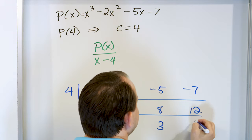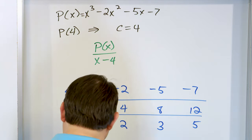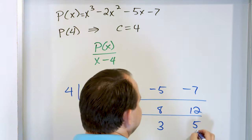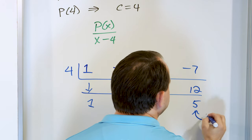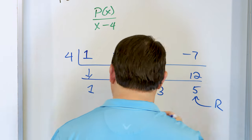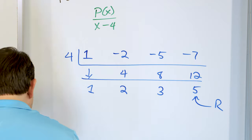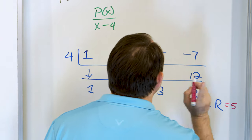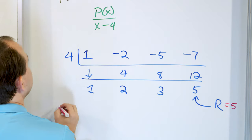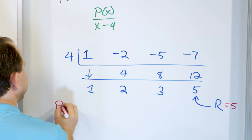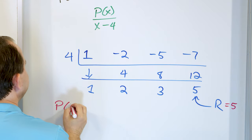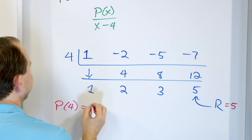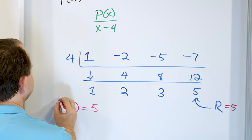I add those together and I get 5. The only number I care about is the very last one — the remainder. So the remainder is equal to 5. That means, because of this theorem, the polynomial evaluated at the number 4 is equal to 5.